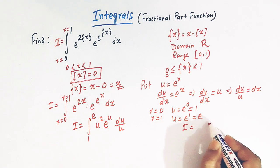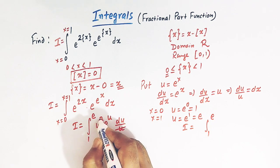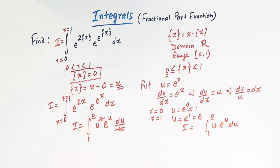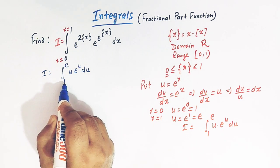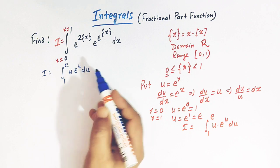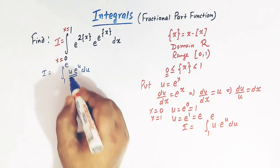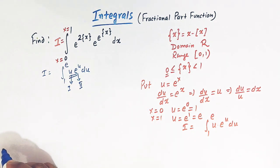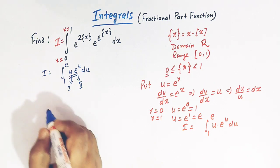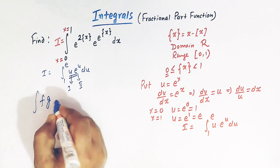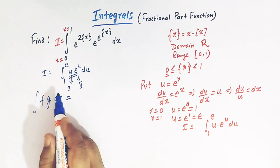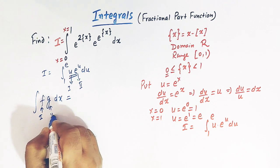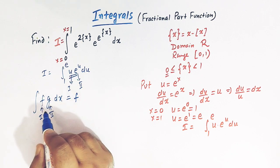So now the integral I is from 1 to e. Here e raised to 2x equals u squared, and e raised to u because e raised to x is u, and dx is replaced by du over u. So the u from u squared and the u in the denominator cancel, and we are left with the integral from 1 to e of u times e raised to u du. Here we have the product of two functions, so we consider u as the first function and e raised to u as the second function.